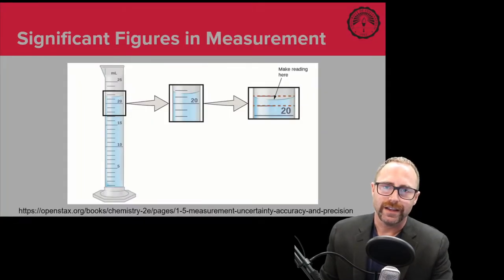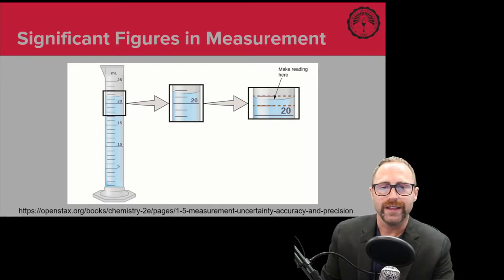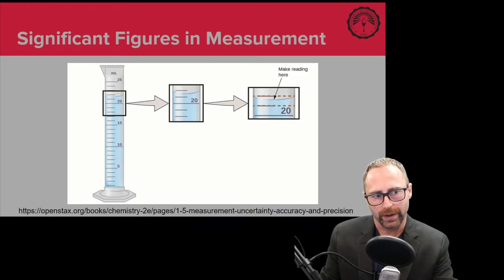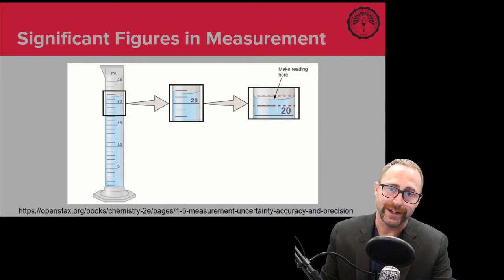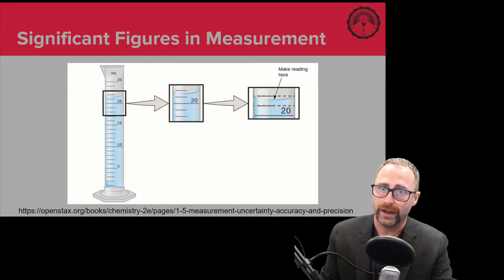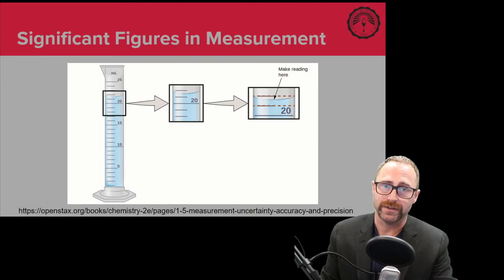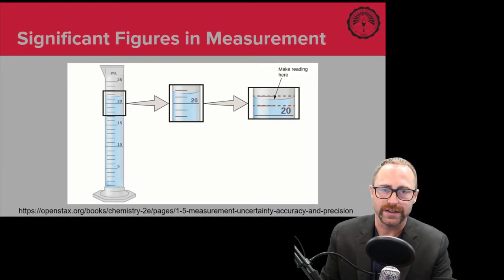One of the key things that this chapter is trying to illustrate and drive home is this idea of significant figures. When we take measurements, we are not always able to get an exact number. For example, an exact number is something like counting the number of apples in a bag — you know that if you have four apples, you exactly have four. However, when we take measurements in the lab, we're usually measuring quantities of things, such as a liquid that you're seeing here on the screen.